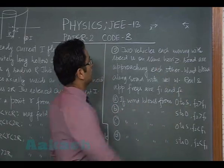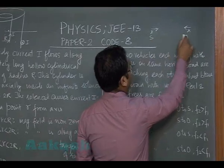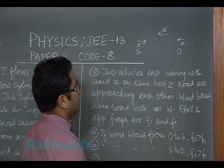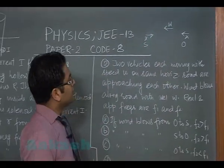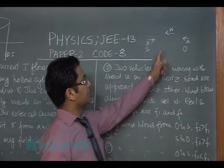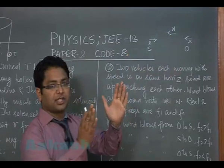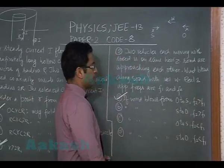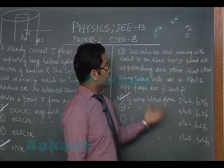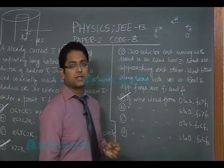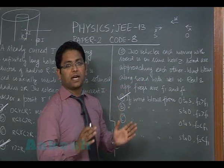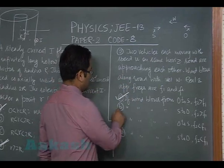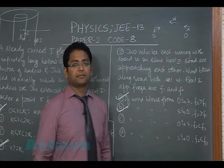Wind blows along the road with velocity w. Real and apparent frequencies are f1 and f2. Let's see - if the wind blows from observer to source, so if I call this as source and this as observer, the wind is blowing in this direction. Quite obviously the speed of sound will have a subtraction with the speed of wind, but since they are approaching, the apparent frequency f2 has to be greater than f1.